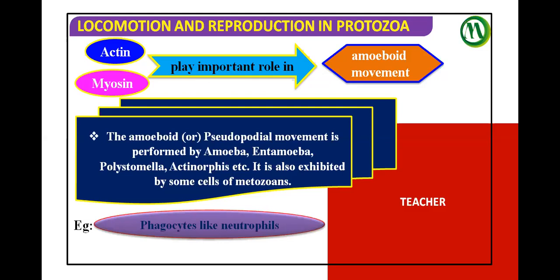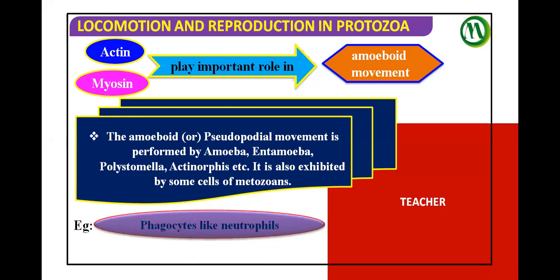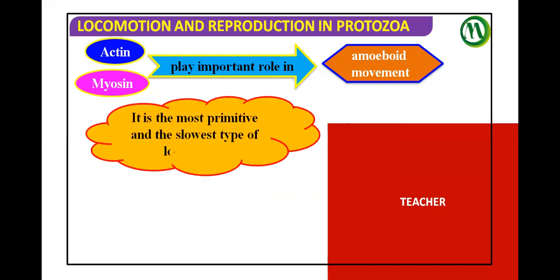There are many theories proposed: surface tension theory by Berthold, front contraction theory, fountain-zone theory by Allen, contraction theory by Dellinger, and rolling movement theory by Jennings. However, the most acceptable theory is L.H. Hyman's Sol-gel theory. Pseudopodial locomotion using pseudopodia is called amoeboid locomotion — it is the most primitive and slowest type of locomotion. Neutrophils, also a type of WBC, also exhibit this kind of amoeboid locomotion.